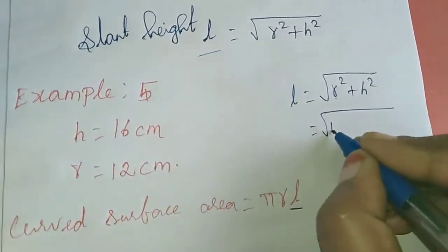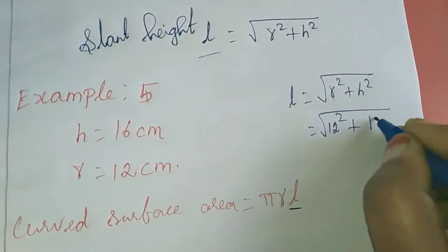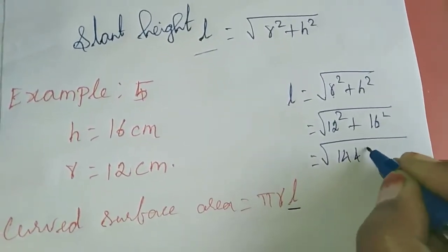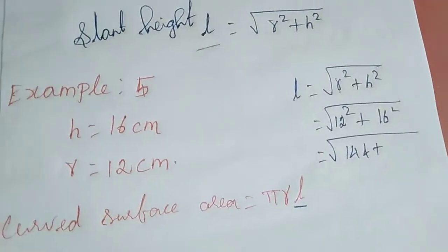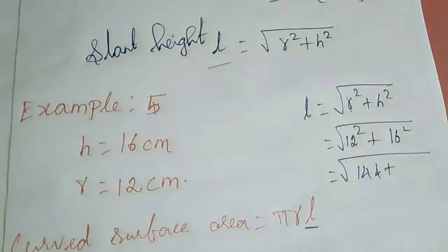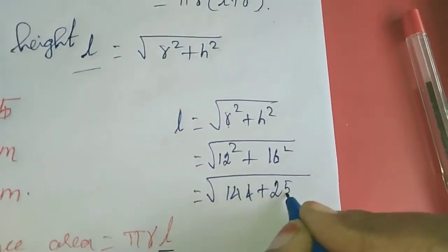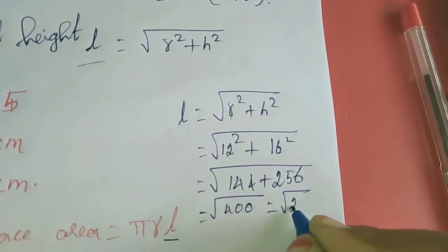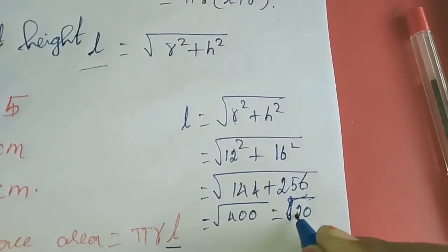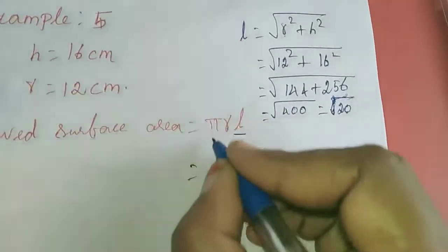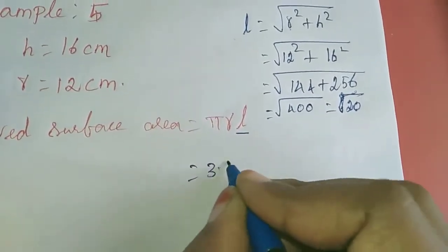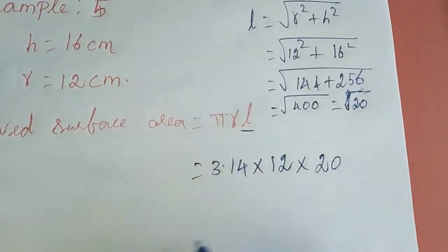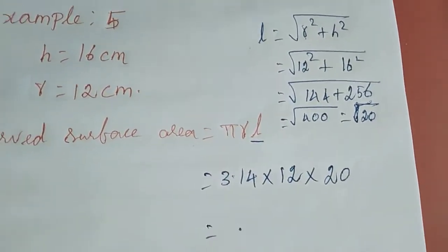Square root of r square means 12 square, h square is 16 square. So 12 square gives 144 plus 16 square gives 256. We get square root of 400, so the answer is l equals 20. So l value is 20. I am going to apply here. For pi they told 3.14, for r it is 12, for l it is 20. We have to multiply and get the answer for curved surface area.